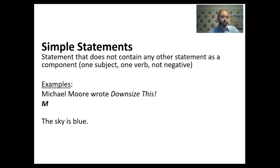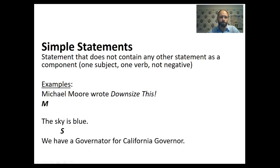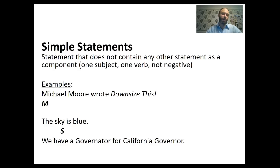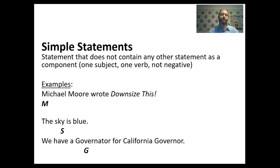'The sky is blue' — we can substitute S for that. 'We have a governator for California governor' — we could substitute G for that. So whenever we saw that simple statement, we would write a G. Simple statements are the basic units we'll be working with.